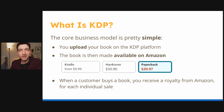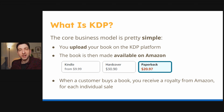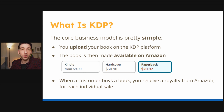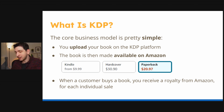What is KDP? KDP, or Kindle Direct Publishing, is a platform made by Amazon that allows everyone to publish their own book for free. The core business model is pretty simple: you upload your book on the KDP platform, the book is then made available on Amazon — potentially in ebook, paperback, and hardcover formats — and when a customer buys your book, you receive a royalty for each individual sale. This is honestly one of the simplest business models you can start online for free without much experience.